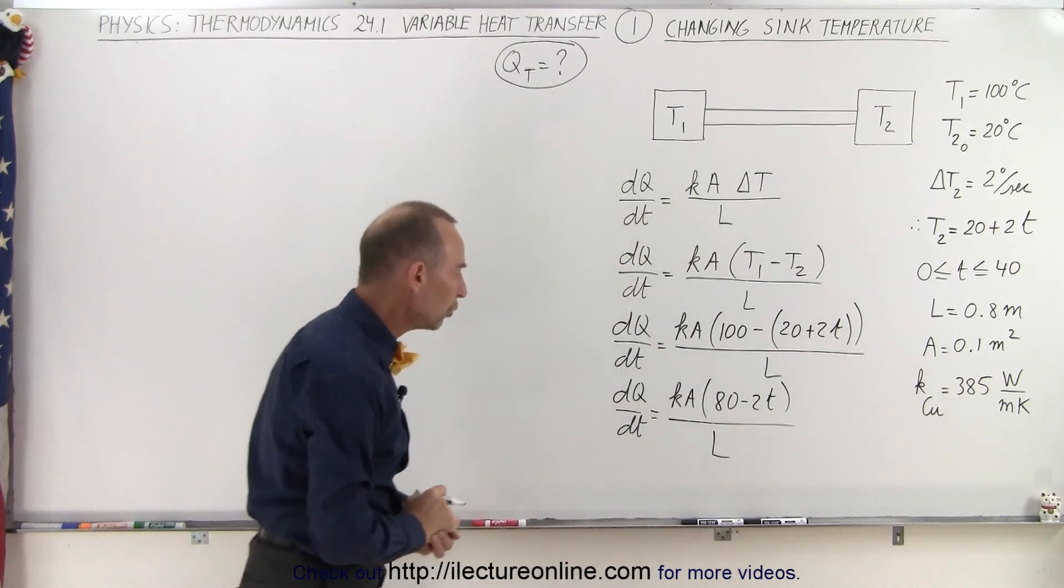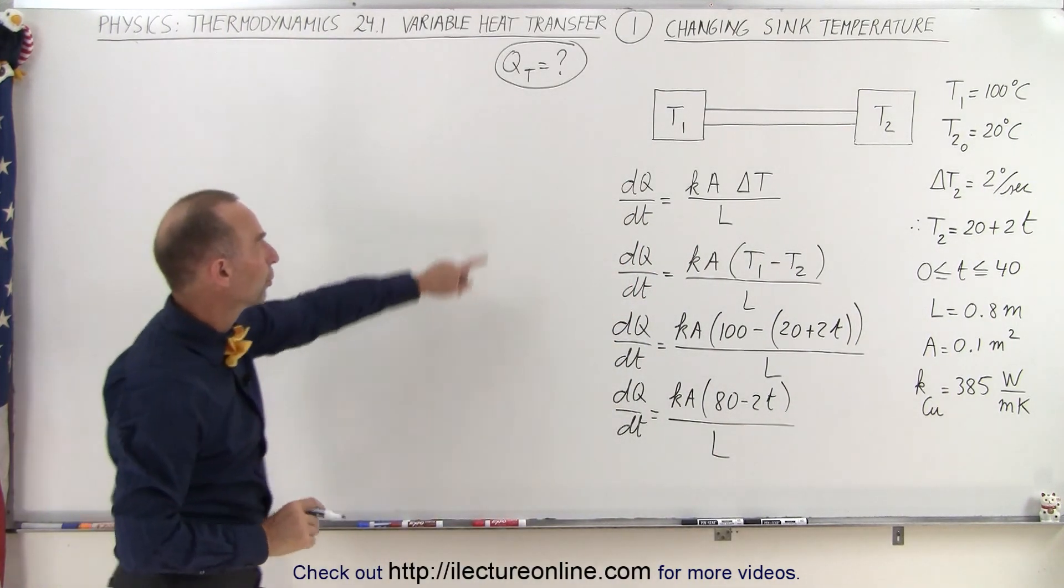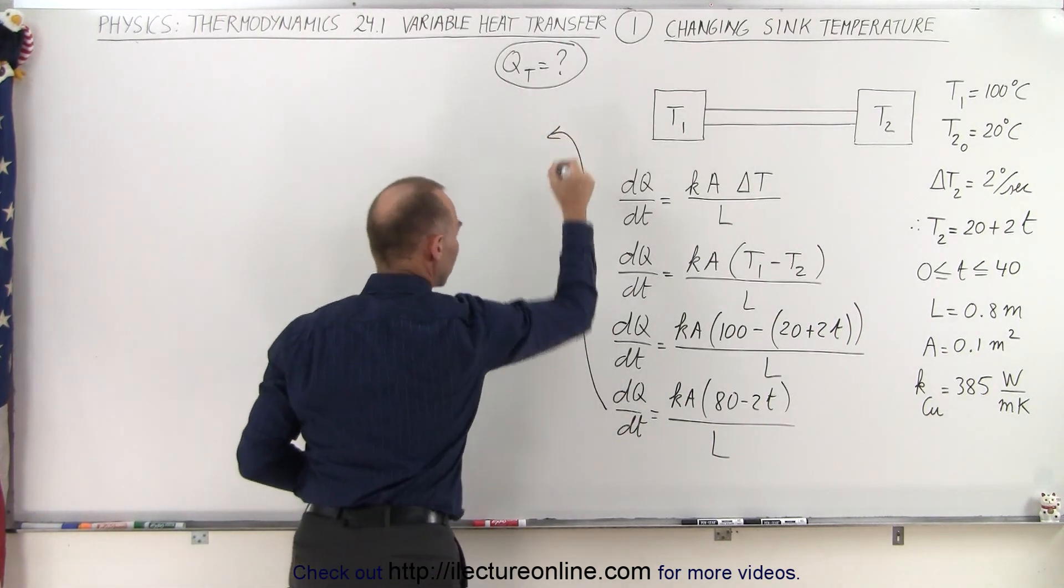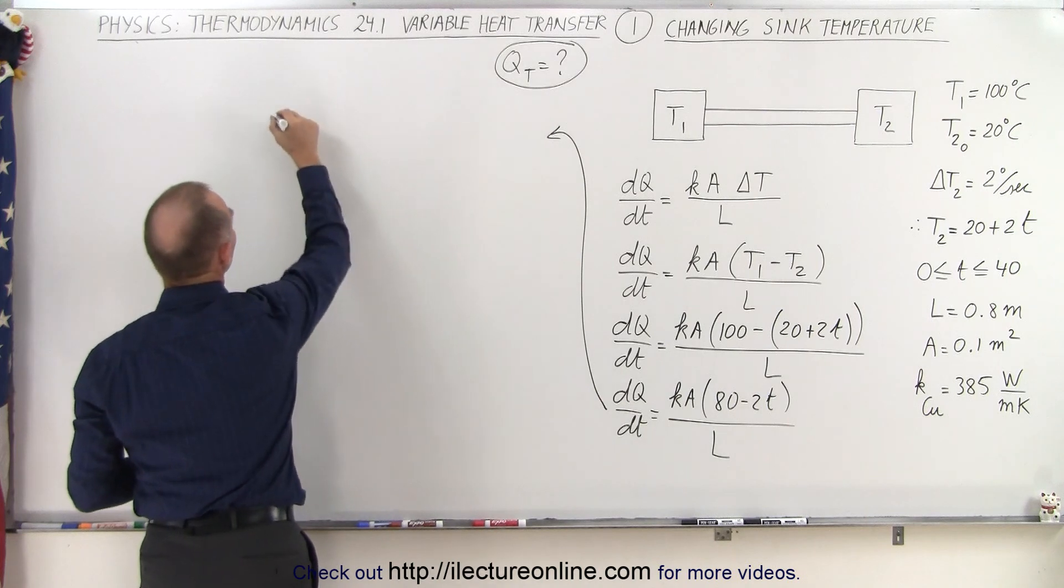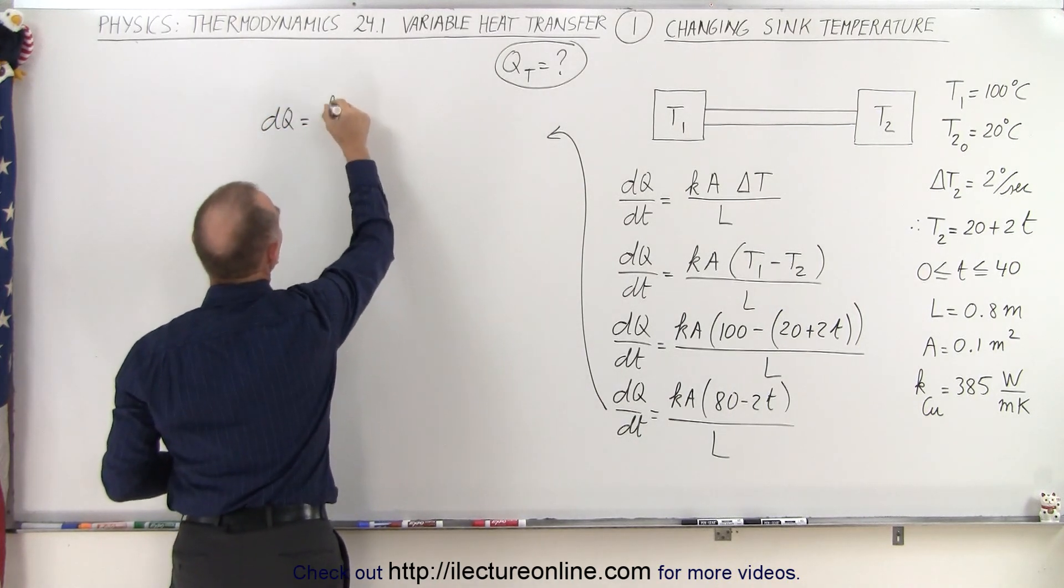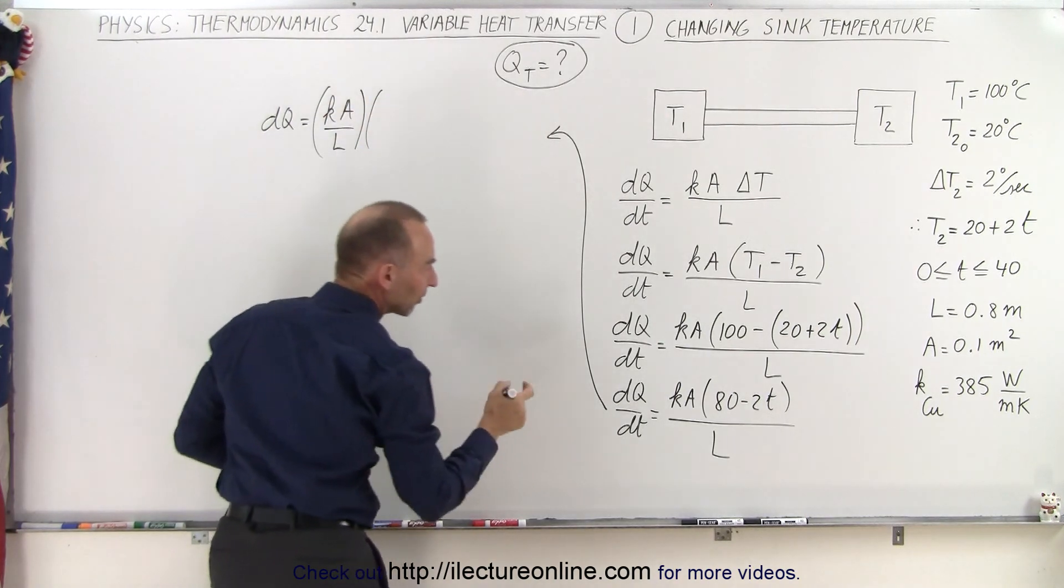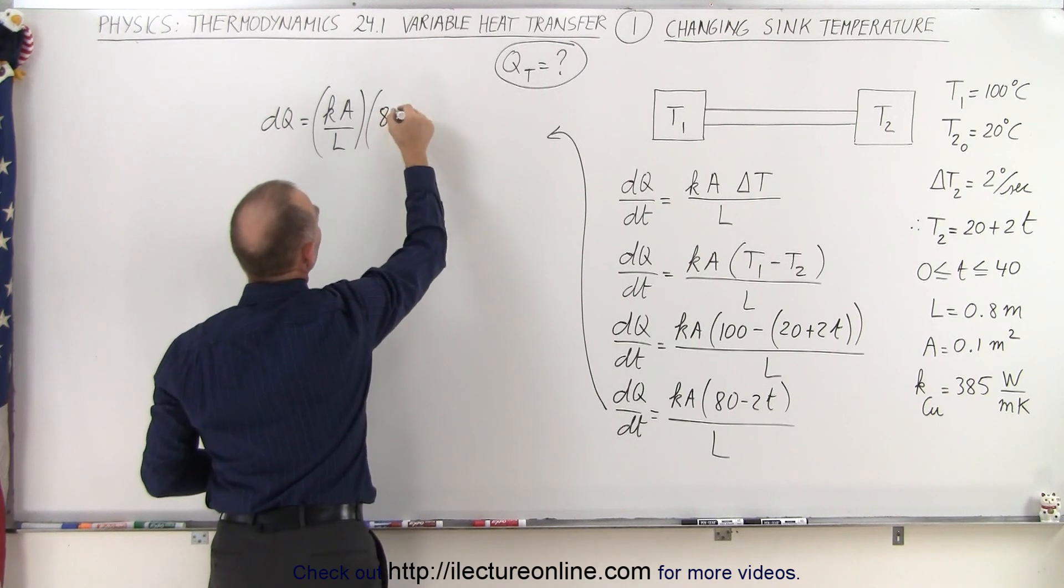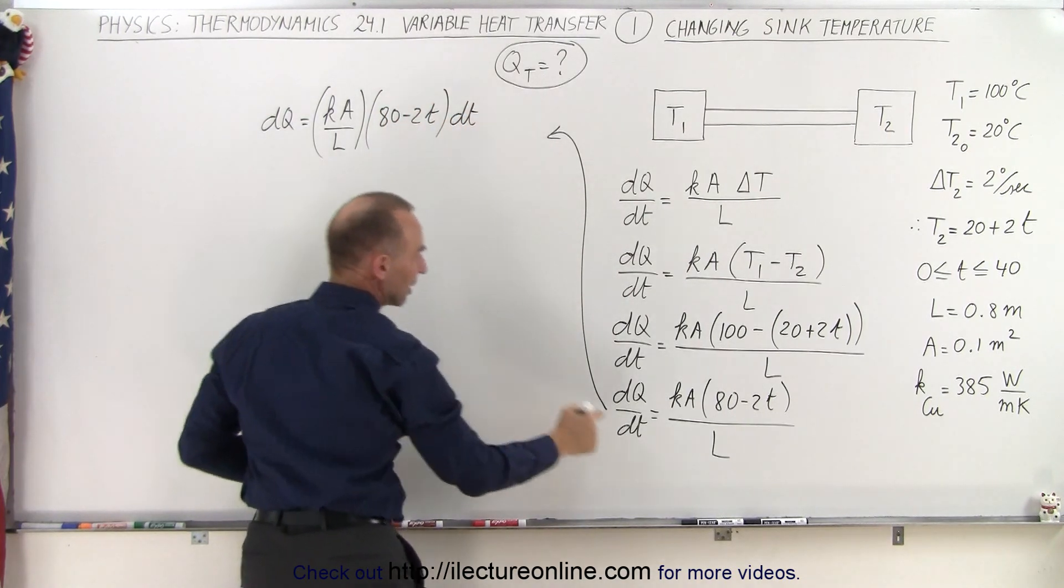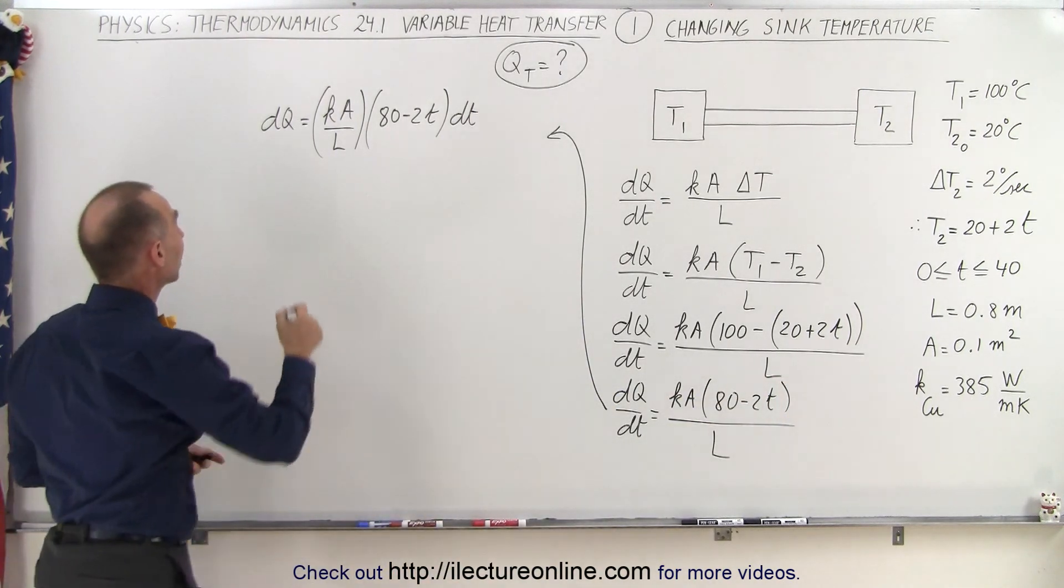And so what we want to do here is solve this equation for Q. That means we want to separate the variables. Which means that we can write that dQ is going to be equal to kA divided by L times what's left, which is 80 minus 2t times dt. So we take the dt from here, move it up there.